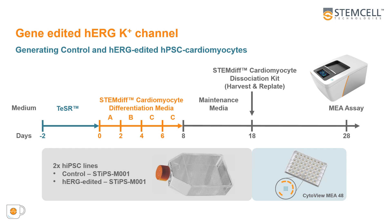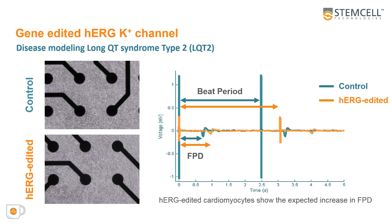On day 18, we used our STEMdiff cardiomyocyte dissociation kit to harvest and replate the cardiomyocytes into the Cytoview MEA 48-well plate. On day 28, we took our first measurements of the field potential signals from both the control and HERG-edited HPSC-derived cardiomyocytes. Here we show images of the control and HERG-edited HPSC-derived cardiomyocytes on day 28 in the Cytoview MEA plate, along with field potential signals recorded from both groups.